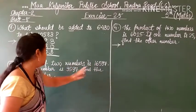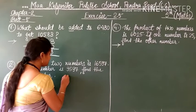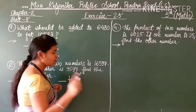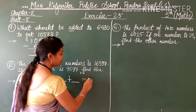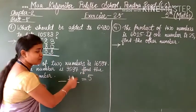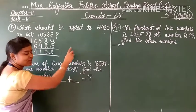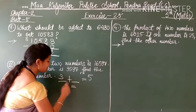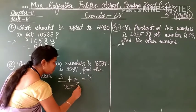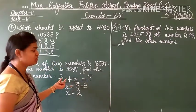Question number 2: The sum of 2 numbers is given; one number is given — find the other number. It is the same type of question. Two numbers are there: dash plus dash equals the total. For example, if the sum is 5 and one number is 3, then x equals 5 minus 3, so x equals 2. In the same way, we subtract the given number from the sum.